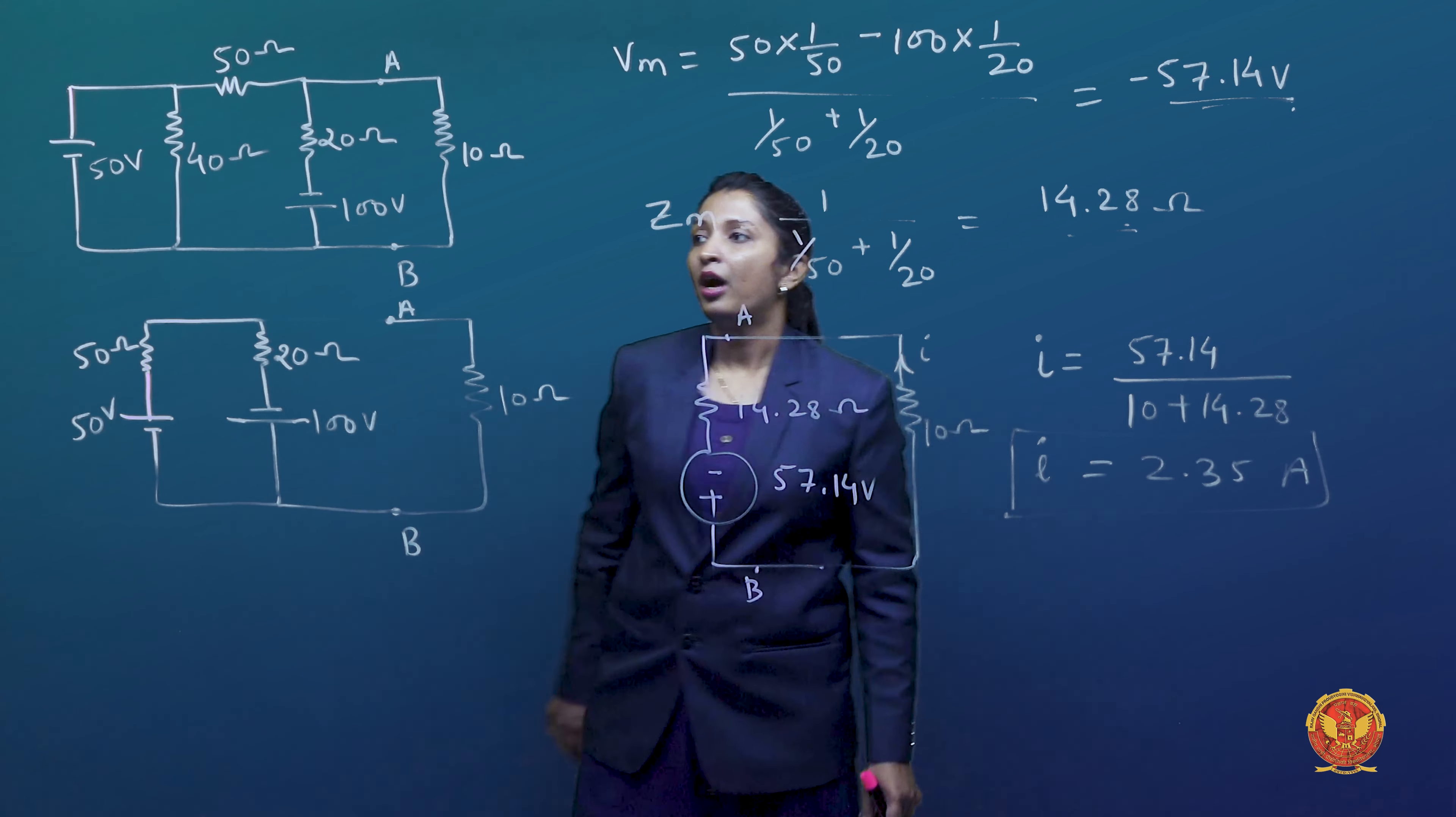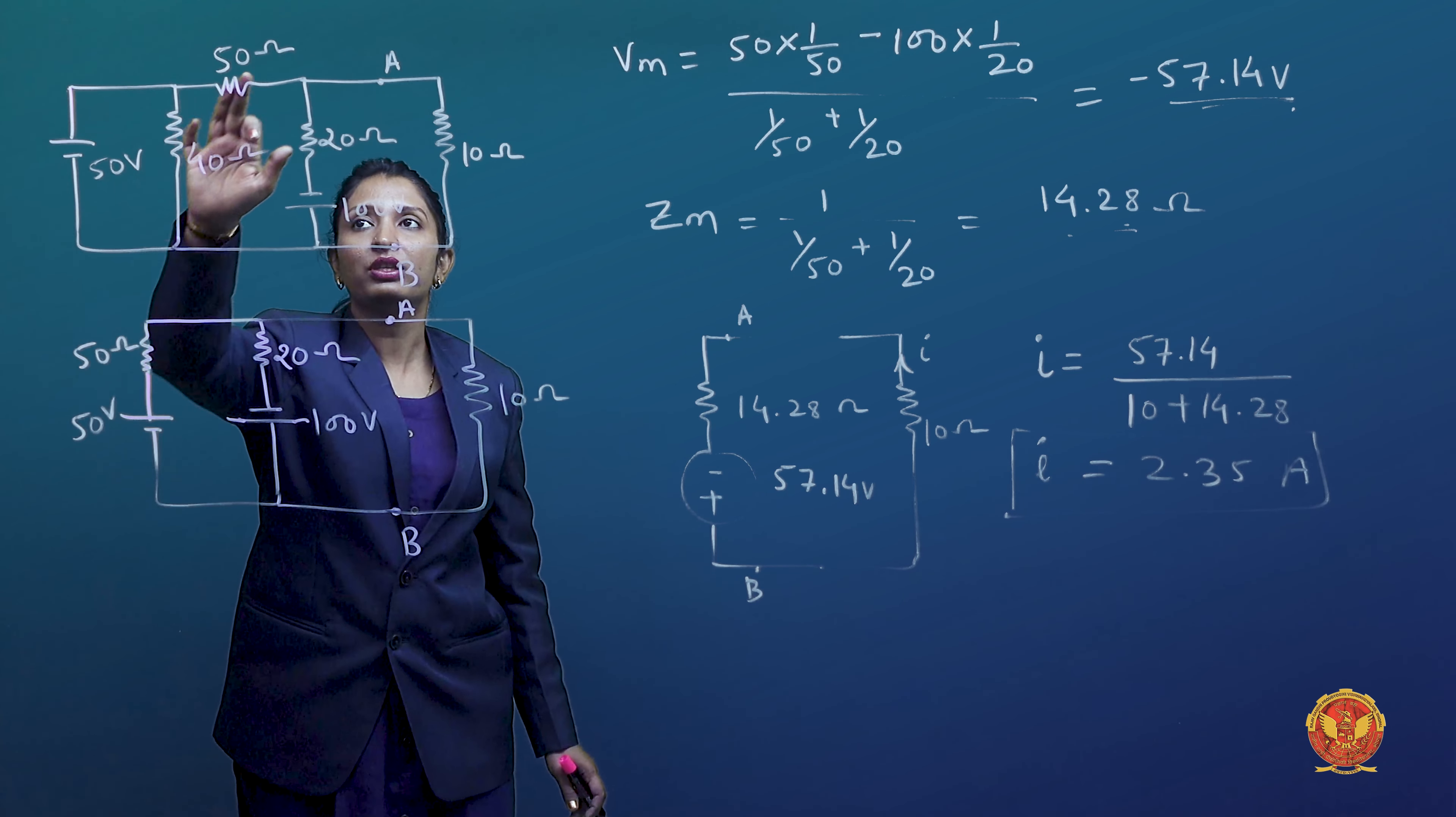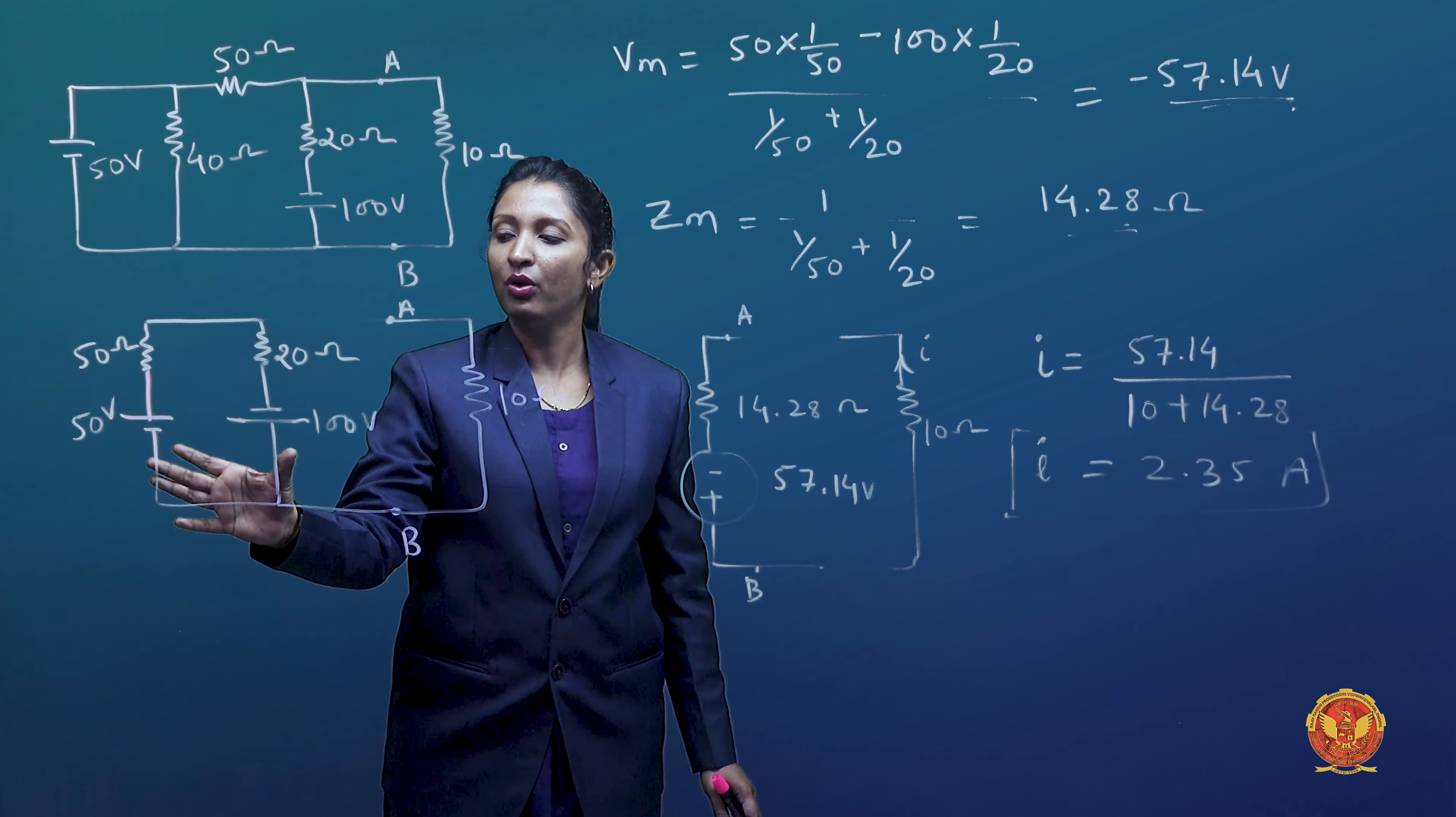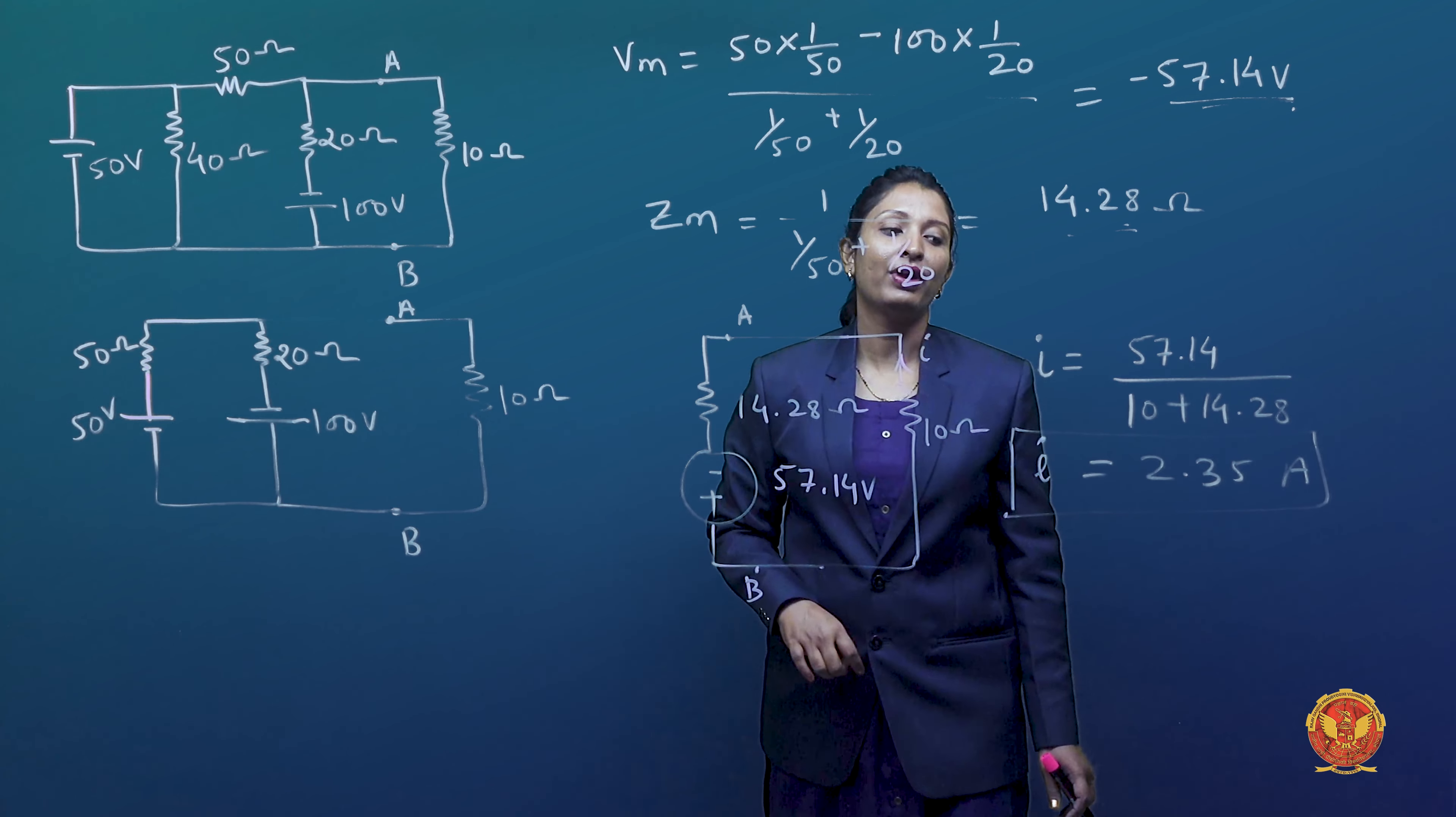What did we do? We had a redundant branch so we removed it. We brought it to the network and formed the Thevenin equivalent which remains, and later on we connected it and found the load current.